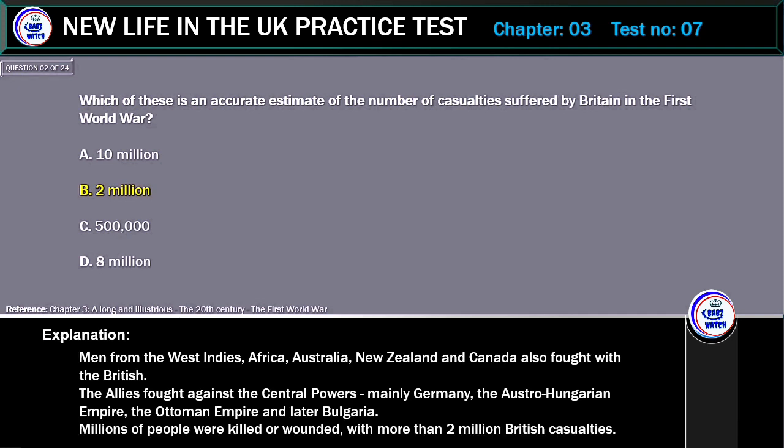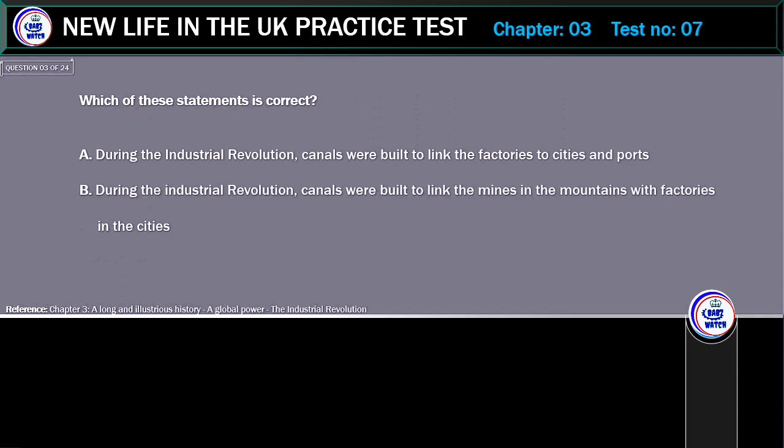Explanation: Men from the West Indies, Africa, Australia, New Zealand and Canada also fought with the British. The Allies fought against the Central Powers, mainly Germany, the Austro-Hungarian Empire, the Ottoman Empire and later Bulgaria. Millions of people were killed or wounded, with more than 2 million British casualties.